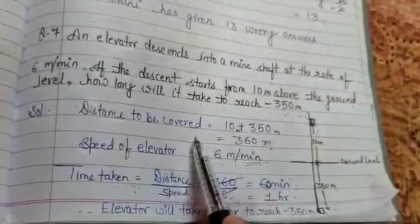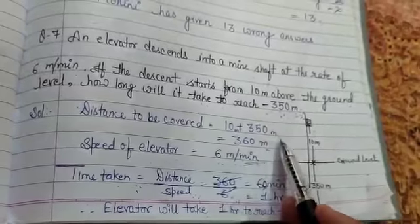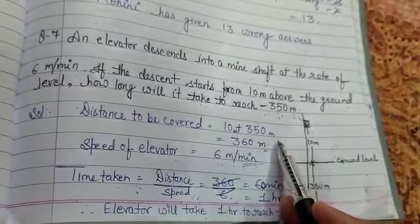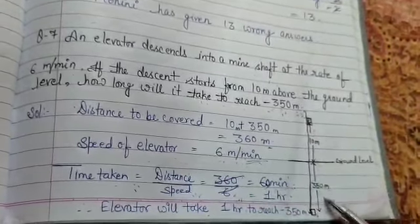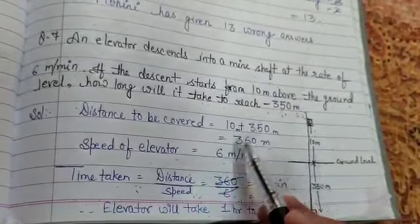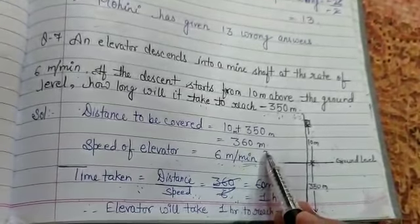So total distance which the elevator has to cover: 10 meters above the ground and 350 meters below the ground. So total, how much distance will the elevator travel? 10 meters here and 350 meters here. Total 10 plus 350, that means 360 meters is the total distance which the elevator has to cover.